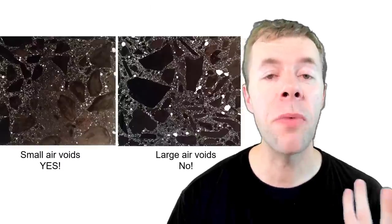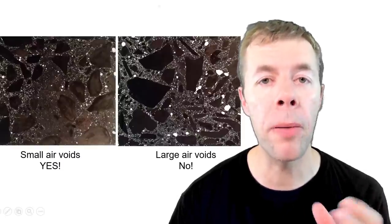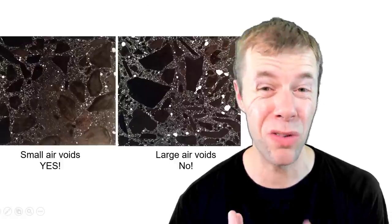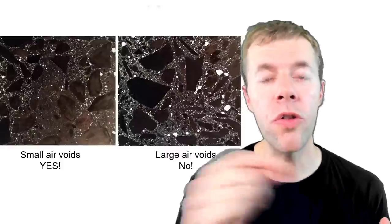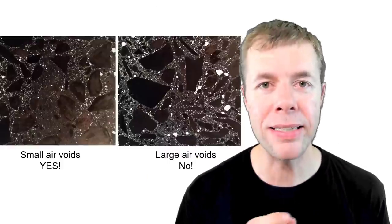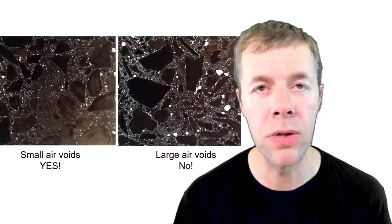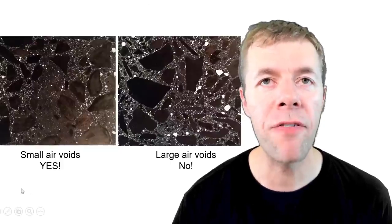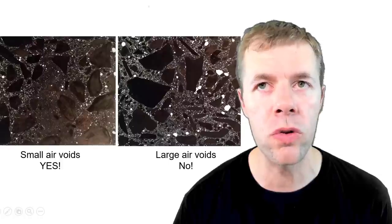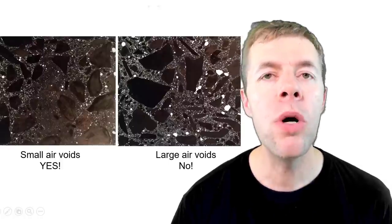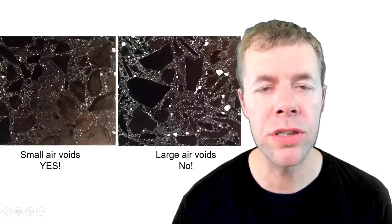Now on the air void system on the left we have a bunch of small bubbles. On the air void system on the right we have a bunch of large bubbles. We've taken these concretes, we've polished them, we've colored them black, we've put white inside all of the voids. You can see on the one on the left there's just not that many large voids. The one on the right, look at all those large bubbles. We would much rather have this air void system on the left.